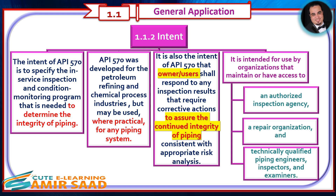API 570 is intended for use by organizations that maintain, or have access to, an authorized inspection agency, a repair organization, and technically qualified piping engineers, inspectors, and examiners.